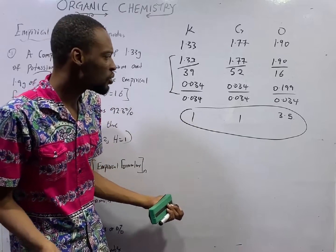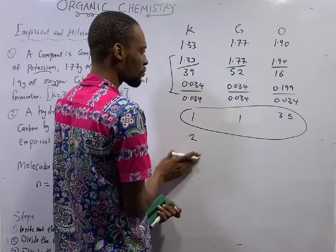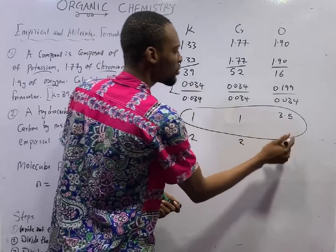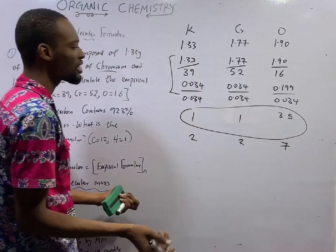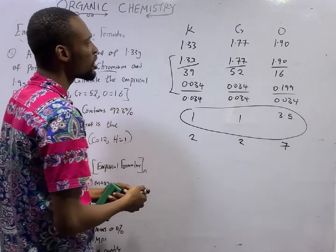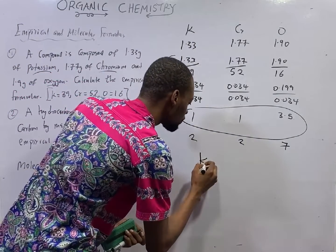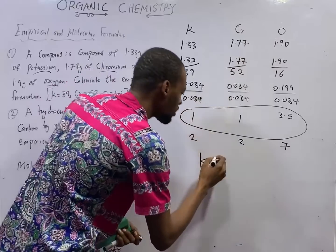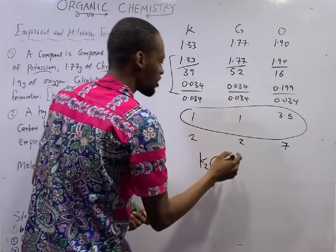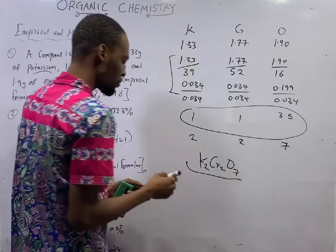If we try multiplying by 2: 1 × 2 = 2 for potassium, 1 × 2 = 2 for chromium, and 3.5 × 2 = 7 for oxygen. This gives us all whole numbers. So the empirical formula is K2Cr2O7.